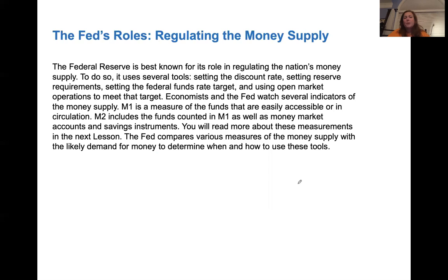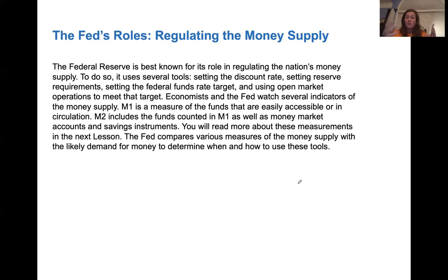The Fed's best-known role is regulating the nation's money supply — it can control how much money is out there in the economy. It uses several tools: setting the discount rate, setting reserve requirements (how much a bank has to hold back from deposits before lending), setting the federal funds rate target, and using open market transactions like selling or purchasing bonds. There are two indicators used for money supply: M1 measures funds that are easily accessible or in circulation — more liquid; M2 includes all M1 funds as well as money market accounts and savings instruments, which are less liquid.